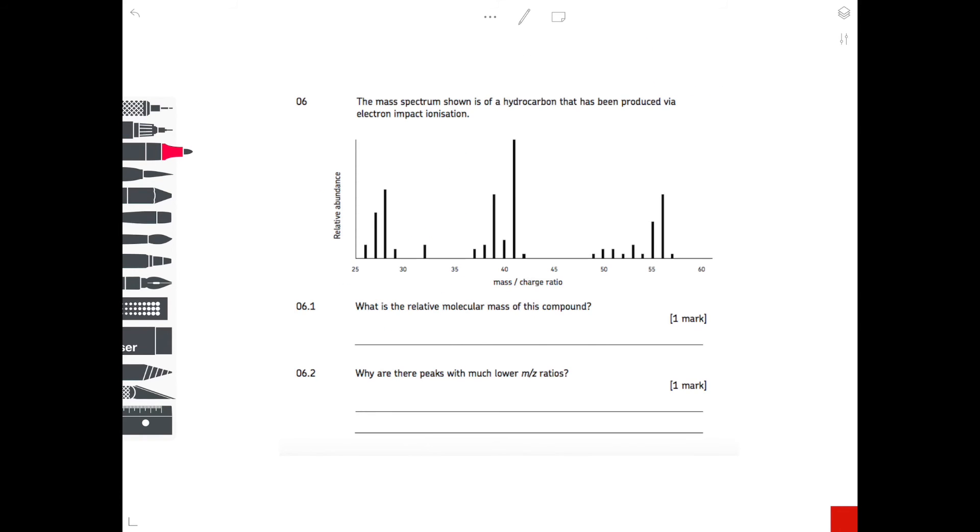Question 6. The mass spectrum shown is of a hydrocarbon—that's important, so it contains hydrogen and carbon only—that has been produced via electron impact ionization. What is the relative molecular mass of this compound? This is probably a bit too much information, but if you see a tiny peak at the end, furthest right, be aware that that is carbon-13, so it's not actually going to be the substance that you're after. So what you want is the largest peak to the left of that, which is actually this one. So here is your answer. So the molecular mass is 56.